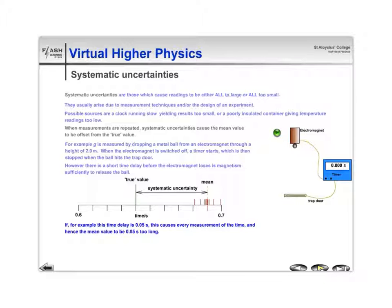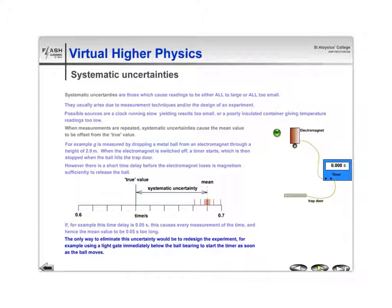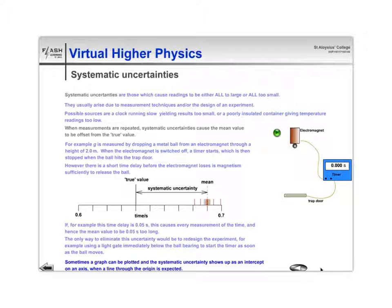For example, if you were looking at an experiment where you dropped a metal ball from an electromagnet, there's often a short time delay before the electromagnet loses its magnetism sufficient enough to release the ball. And that would be true every single time you took a reading.